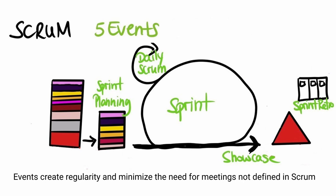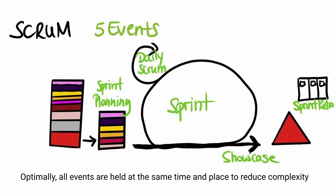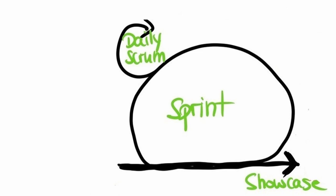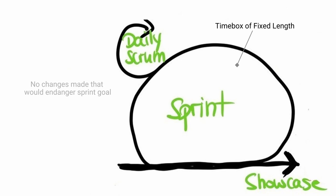The Sprint. Sprints are the heartbeat of Scrum. It is a time box of fixed length which creates consistency — usually two weeks. A new Sprint starts immediately after the conclusion of the previous Sprint. During the Sprint: no changes are made that would endanger the Sprint goal, the product backlog is refined as needed, and scope may be clarified and renegotiated with the product owner as more is learned.